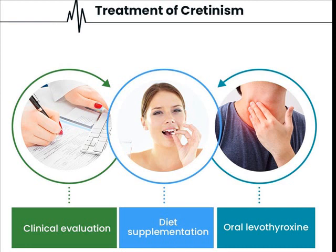Treatment of cretinism includes clinical evaluation, diet supplementation, and oral levothyroxine. Once diagnosed, treatment should be started within one to two weeks of life, and should be started before the onset of symptoms. If developmental abnormalities and mental retardation have already appeared, they will not reverse even with thyroid hormone replacement therapy.